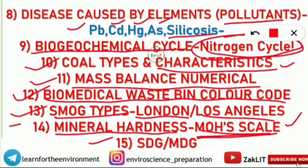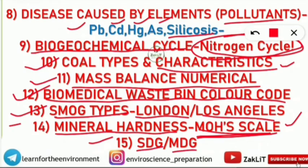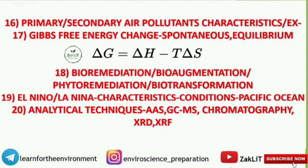Number fifteen is Sustainable Development Goals (SDGs) and Millennium Development Goals (MDGs) — both are very, very important. Additionally, primary and secondary air pollutants, their characteristics and examples, are important. Number sixteen is Gibbs free energy change: when is a reaction spontaneous, when is it at equilibrium, using the formula ΔG = ΔH − TΔS. Numerical problems can also appear in this form.